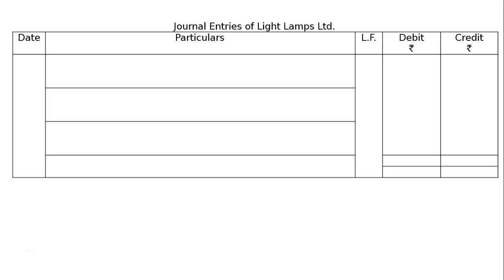Light Lamps Limited issued 50,000 shares of ₹10 each as fully paid up to the promoters for their services to set up the company. It also issued 2,000 shares of ₹10 each credited as fully paid up to the underwriters of shares for their services. Journalize these transactions — journal entries of Light Lamps Limited.